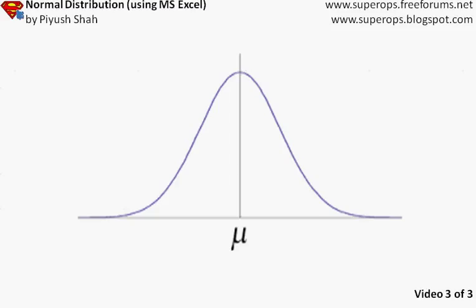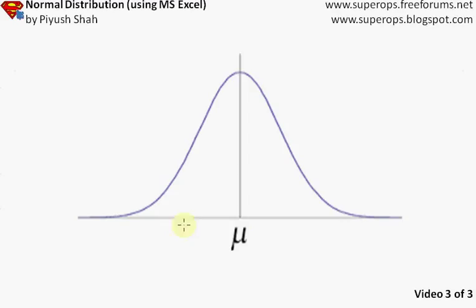Whenever you see normal distribution, you would probably see this curve. It's a very easy curve to understand. The x-axis tells us the values for which we are trying to find the probability. For example, the number of biscuits demanded — say 100, 200, 300, 400 biscuits — would be represented on the x-axis. This could be the number of people in a train, the thickness of a widget manufactured in a factory, or the time taken to receive a call by customer service.